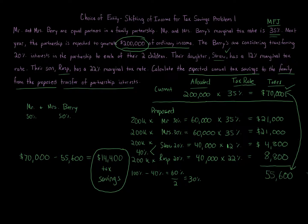Of course, tax isn't the only driver here. By giving ownership to the children, they now have a say in decisions. Mr. and Mrs. Berry together still collectively own more than half, so they control the partnership, but they're giving small portions to their children as part of a gradual wealth transfer. You also have to consider gift tax implications — we're only dealing with income tax here, but gifting these interests to children looks like a complete gift transfer, so gift tax can play a factor.